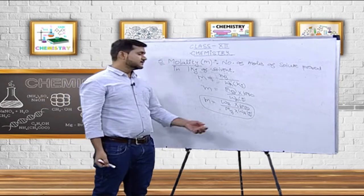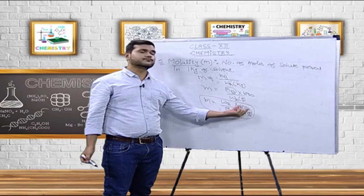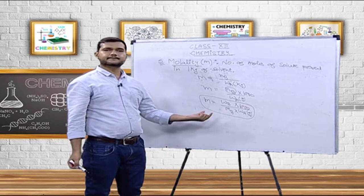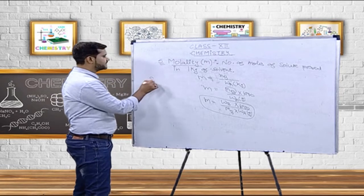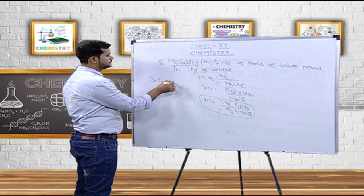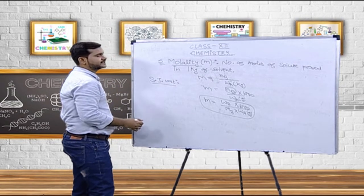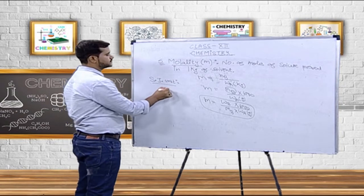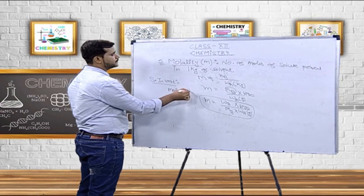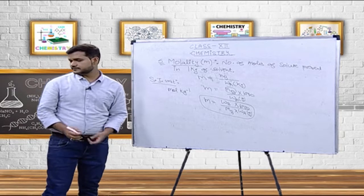If we are taking the mass of solvent in kilograms then there is no need to put the factor of 1000. The SI unit of molality — it is number of moles in 1 kg of solvent — so this will be mole per kg.